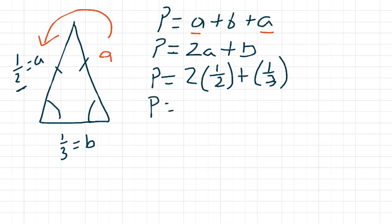P equals this 2 above here can be written as a fraction by using the invisible one, so 2 over 1. 2 over 1 times one-half plus one-third.